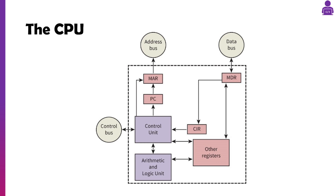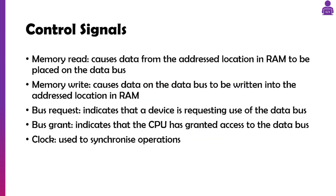There are a bunch of control signals sent on the control bus. A memory read request causes data from the address location in RAM to be placed onto the data bus. A memory write takes the data from the data bus and puts it in the location specified in RAM. A bus request indicates a device wants to use the data bus, and a bus grant is where the CPU says yes, you can use that bus. There's also a clock that pulses to synchronize operations and ensure they're all in the correct order.